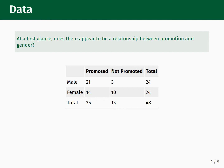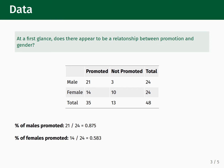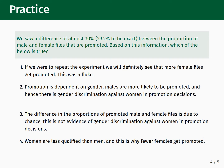At first glance, does there appear to be a relationship between promotion and gender? We see that 21 men were promoted and 14 women were promoted. When dealing with two categorical variables like male vs. female and promoted vs. not promoted, the relevant metric is the percentage of men and women that were promoted. We construct the fractions and find that about 87.5% of men were promoted and about 58.3% of women were promoted, so we are seeing a difference of almost 30% between the proportion of male and female files that are promoted.